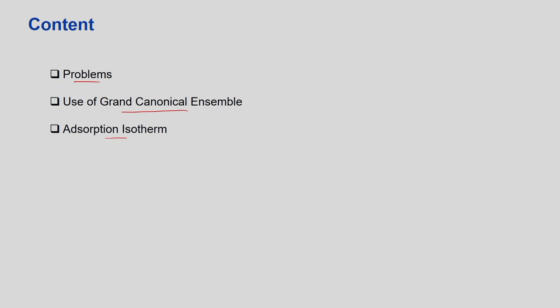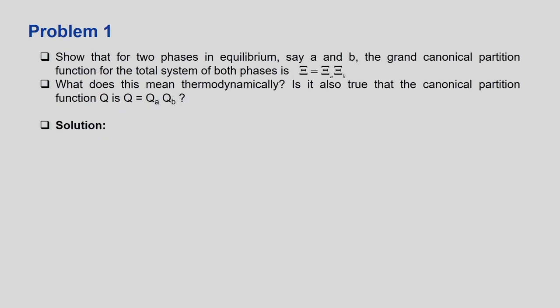Let us discuss some elementary problems, then we will go across to adsorption. The first problem says: show that for two phases in equilibrium, phase A and phase B, the grand canonical partition function for the total system is given by Ξ(μ,V,T) = Ξ_A × Ξ_B. If we prove this, what does it mean thermodynamically? Is it also true that the canonical partition function Q = Q_A × Q_B? We will see that.